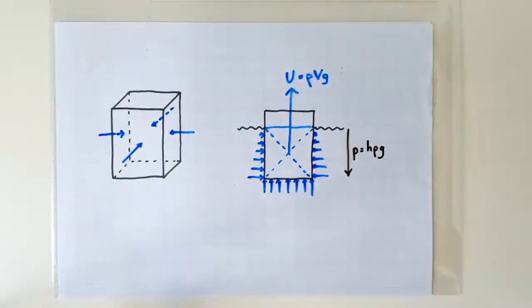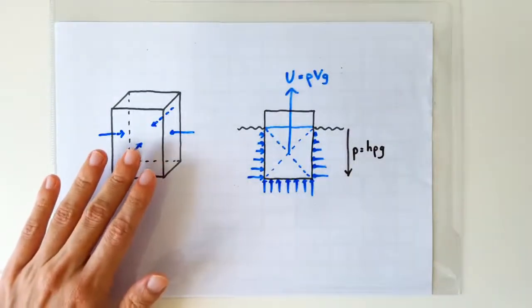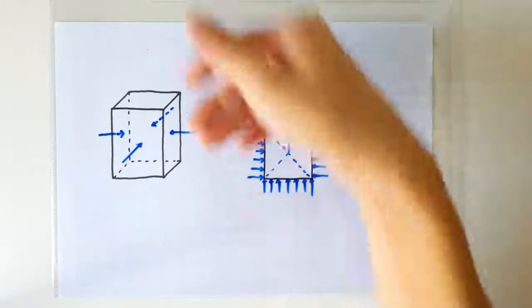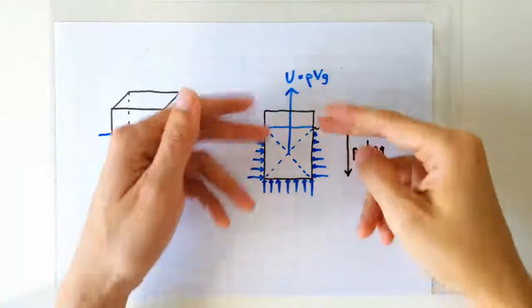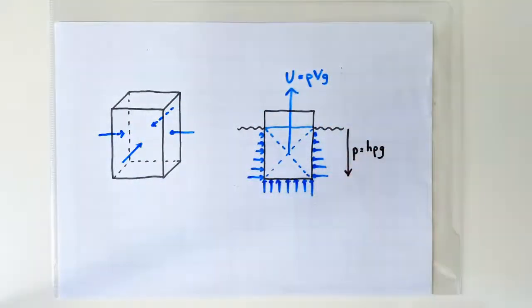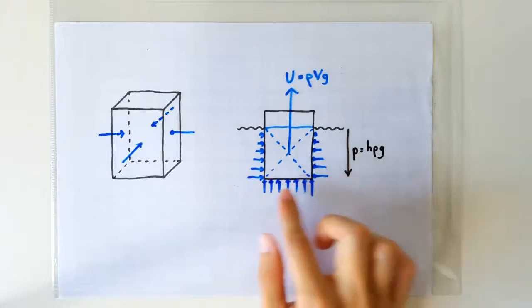Likewise, all the horizontal forces pushing on the front face are exactly balanced by all the horizontal forces acting on the back face. So the resultant of all these pressure forces would simply be the resultant of the pressure forces acting on the bottom surface only.